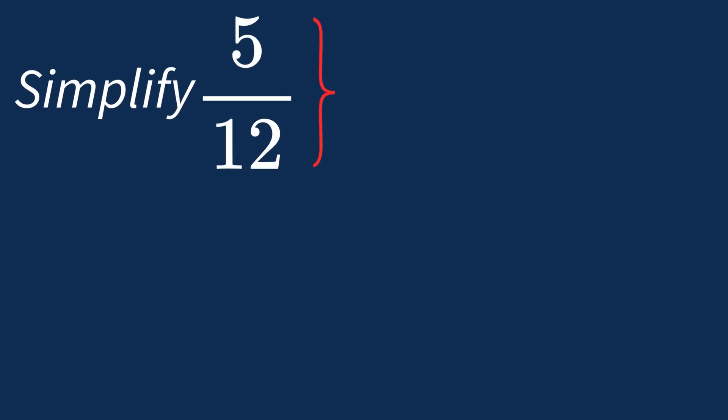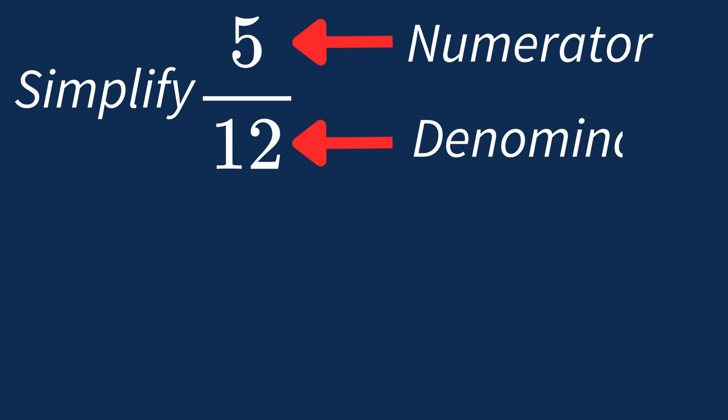When simplifying a fraction like 5 over 12, the first step is to check if there's a common factor between the top number, the numerator, and the bottom number, the denominator.